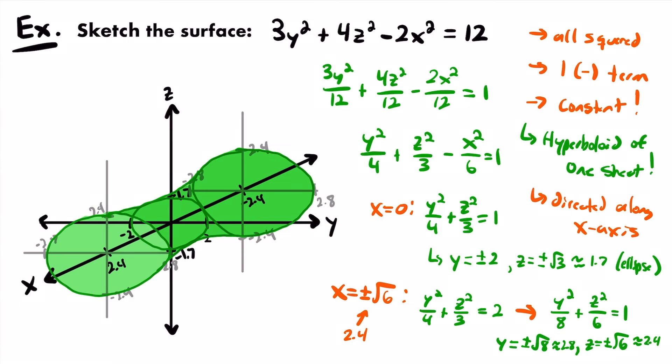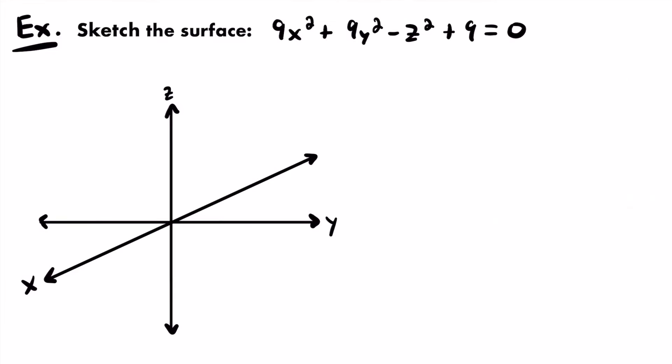Next we want to sketch the surface represented by: 9x² + 9y² - z² + 9 = 0. The first thing we want to do is identify the surface. We have three variables — x, y, and z — and all three are squared. It looks like one of them is negative at first, suggesting a hyperboloid of 1 sheet. But you have to be careful — look at the constant term.